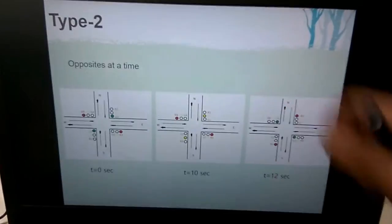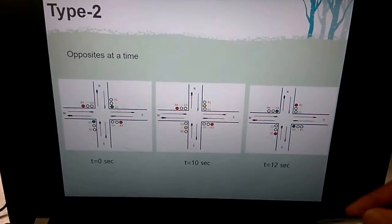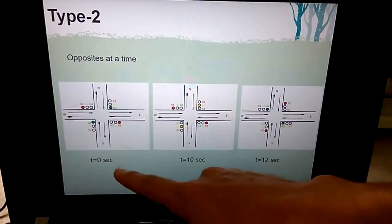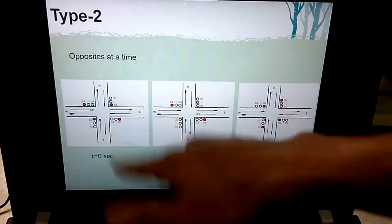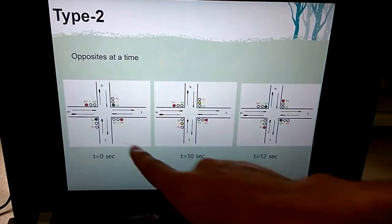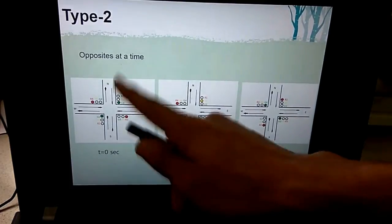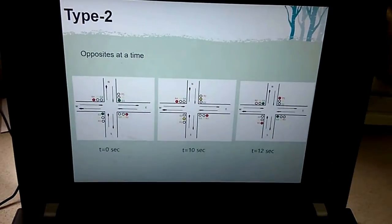Now, coming to the type 2 crossing. This is the type 2 crossing, where we are allowing only opposite lanes to go. For example, north-south lane is allowed to go and the east-west lane is made to stop. There is a red light showing in the east-west lane and north-south lane is open to go.